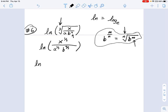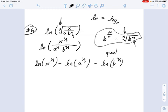We just say this is natural log of x to the one-third minus natural log of a to the one-third minus natural log of b to the four-thirds. This is really the quotient rule.